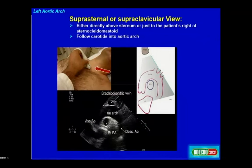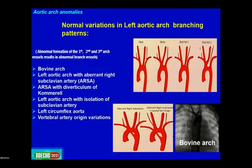Normal variations in the left aortic arch and branching patterns include bovine arch, left aortic arch with aberrant right subclavian artery, diverticulum of Kommerell, and others.